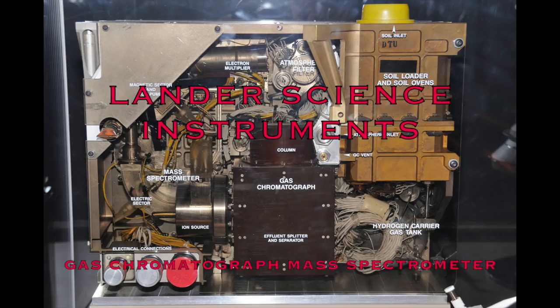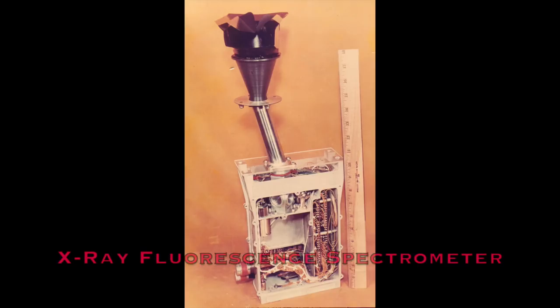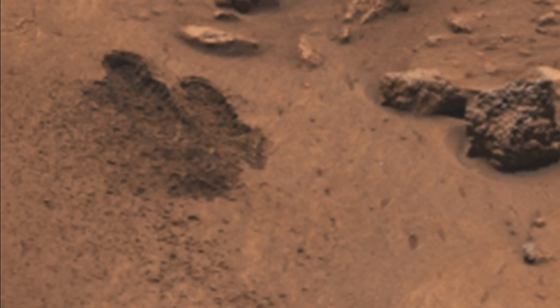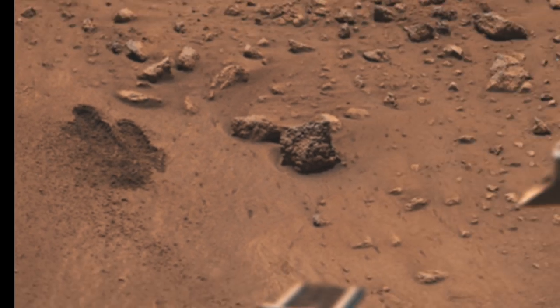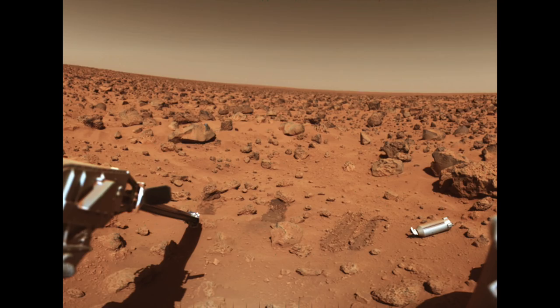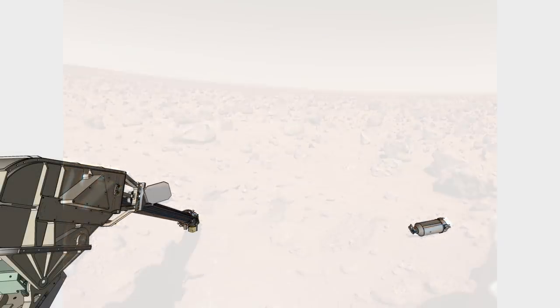A major mission scientific objective was to learn about the chemistry and possible biology of Martian soil. To do so, the robotic spacecraft needed to obtain soil samples for analysis by the lander's science instruments. This video describes the design and operation of the Viking lander's surface sampler acquisition assembly hardware.